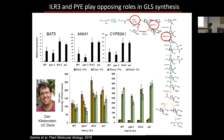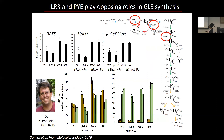We teamed up with Daniel Klebenstein and measured glucosinolate levels. We found that glucosinolates appear to go up in an ILR3 mutant background — particularly in the root — with effects that were somewhat iron deficiency-dependent. This suggests that ILR3 and Popeye act in opposing ways to modulate glucosinolate synthesis under iron deficiency.